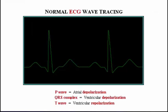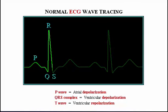In this animation, we see heart electrical activity reflected in an ECG wave tracing. The P wave represents atrial depolarization. The QRS complex represents ventricular depolarization. And the T wave represents ventricular repolarization.